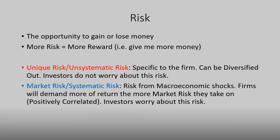Before we learn how to calculate beta, it's important we have a good understanding of what risk is. Risk is the opportunity to gain or lose money. There are really two types of risk: unique risk and market risk. Unique risk is firm-specific — it can be diversified out, and investors aren't really too worried about it. Because it can be diversified out, investors don't need to be compensated for this type of risk.